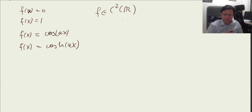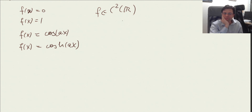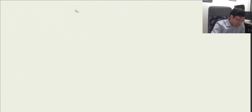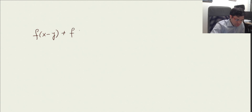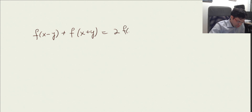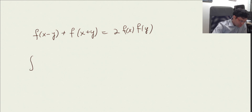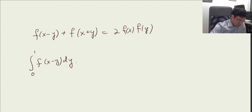But what if f is only continuous? There is a very beautiful argument communicated by a friend, who read it in a paper by somebody named Katz. We can actually prove for this type of equation that if f is continuous, then f is in fact infinitely many times differentiable. What we can do is the following trick: integrate f(x−y) over y in some interval, say zero to one.